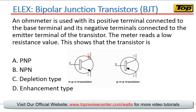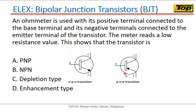For an NPN transistor, the emitter is N-type, the base is P-type, and the collector is also N-type. For a PNP transistor, the emitter is P-type, the base is N-type, and the collector is also P-type. We can identify these using the arrow shown on the emitter — because in a BJT symbol, only the emitter has an arrow. If the arrow points outward, that is NPN; if it points inward, that is PNP.